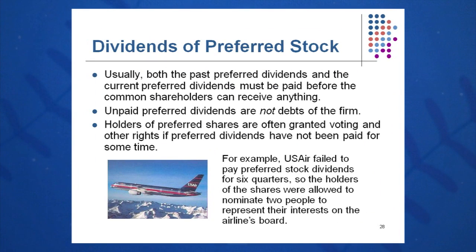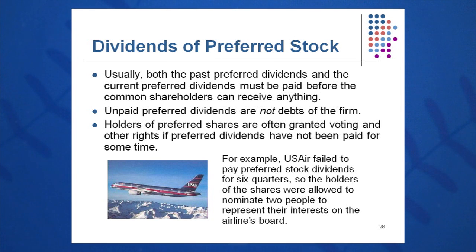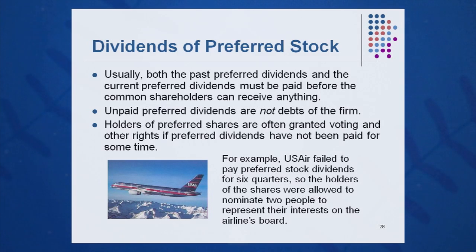If it goes too many years without a dividend, companies will sometimes give stockholders some advantages. For instance, USAIR didn't pay a dividend for quite a while, so they gave stockholders two people on the board of directors to represent their interests. You may get deals like that if a company is having financial difficulty and can't pay a dividend for a year or two.